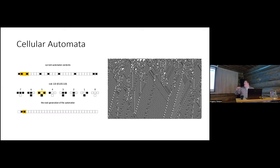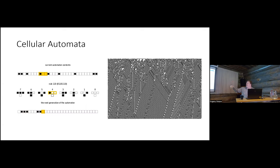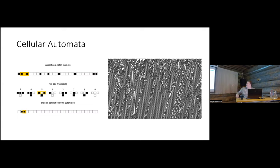Cellular automata is a very simple system where, in this example, you only have two states: black and white, zero and one. It is completely deterministic — each cell sets its next state based on a limited set of neighbors. This rule is called Rule 110 because that is the binary encoding of the eight different neighborhoods a cell can have when it has only three neighbors to consider.